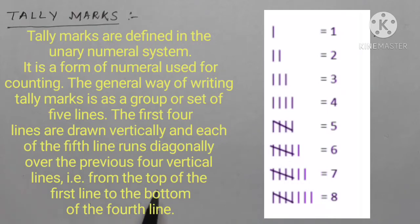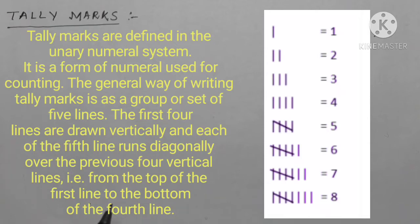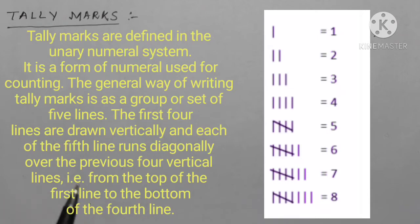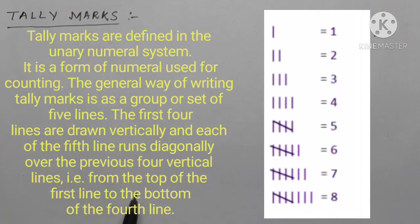Tally marks are defined in a unary numeral system. It is a form of numeral used for counting. The general way of writing tally marks is as a group of five lines - the first four lines are drawn vertically, and the fifth line runs diagonally over the previous four vertical lines from the top of the first line to the bottom of the fourth line.